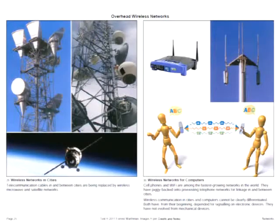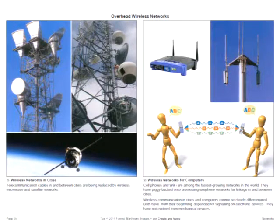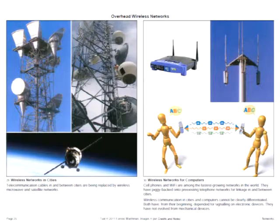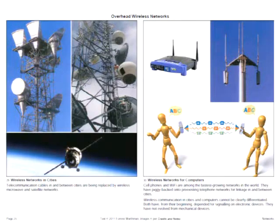Wireless networks exist both at the city level and at the computer level, and the two have become integrally involved. Basically, the Wi-Fi and cell phone wireless networks have piggybacked on pre-existing telephone networks that created these early microwave repeater towers and satellites.